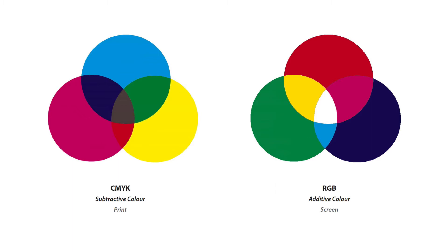If you imagine having three different torches — a red, green, and blue torch — and shining them onto a wall, where those three colors overlap you'd actually get pure white light. We use the RGB color model for web work and for working on screen.